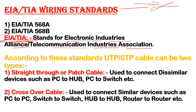For twisted pair network cables, EIA/TIA also created standards: EIA/TIA 568A and EIA/TIA 568B. In those standards, they define which type of cable you need for connecting similar devices and which type for dissimilar devices.